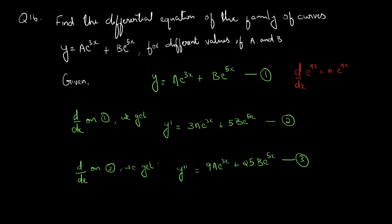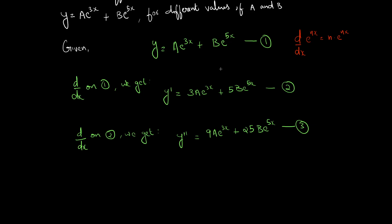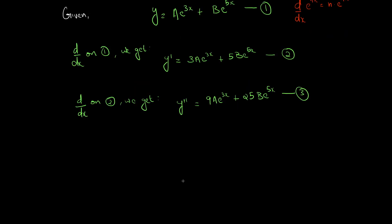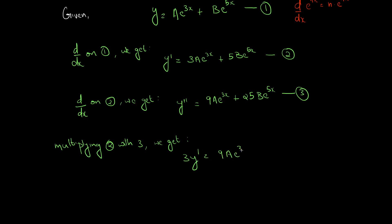Now we have three equations. We need to eliminate the constants a and b using these three equations. We can make the coefficients equal using any two equations, eliminate one term, then substitute for it. Multiplying equation 2 by 3, we get 3y dash equal to 9a e raised to 3x plus 15b e raised to 5x.